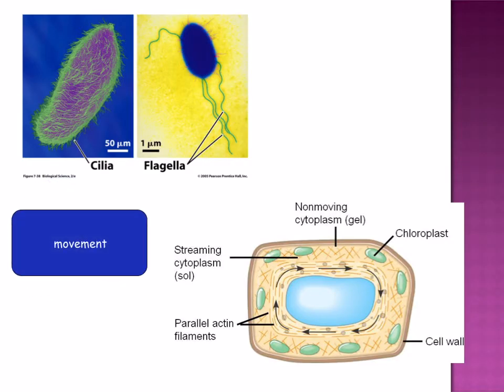Movement: ATP provides energy for the movement of cilia, flagella, and something called cytoplasmic streaming, which is when the cytosol — the liquid component of the cytoplasm — and organelles move around large fungal and plant cells. Energy is also needed in muscle contraction.